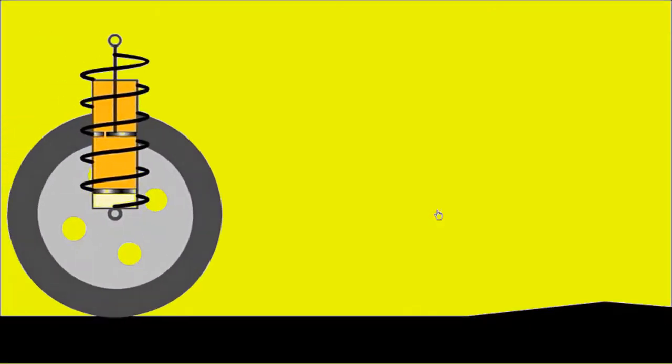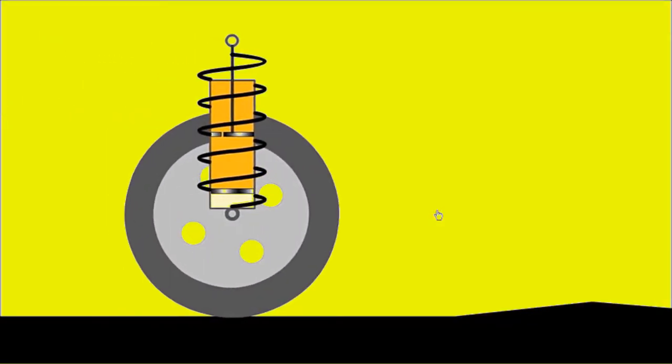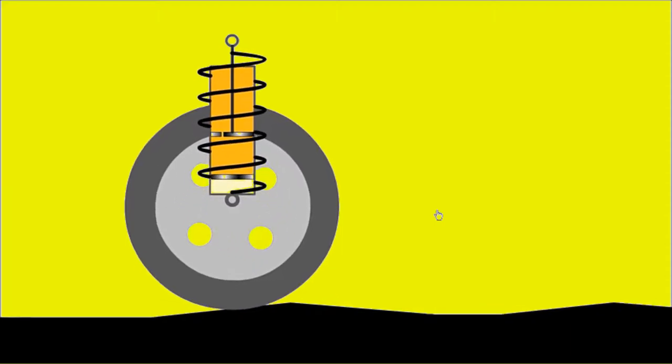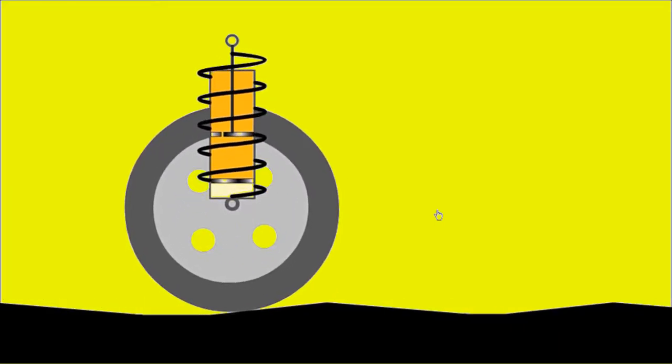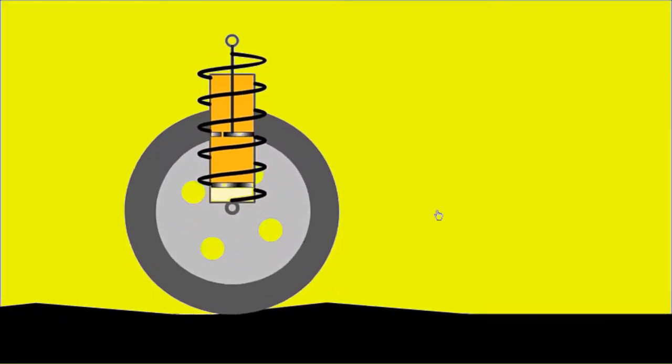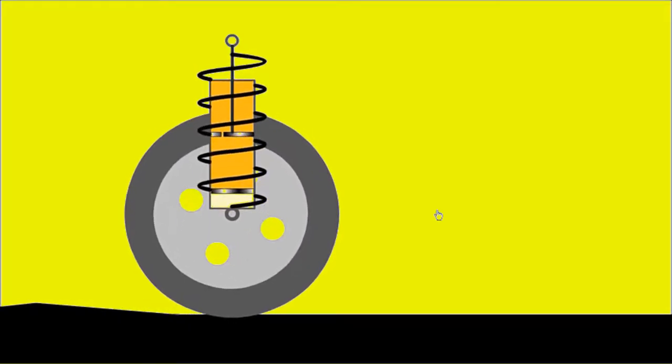The suspension consists of springs, linkages and dampers. It connects the car with the road surface through the wheels and tires. It provides comfort for the occupants and helps maintain the wheels in good contact with the road, providing traction and cornering stability and reduces the stopping distance.